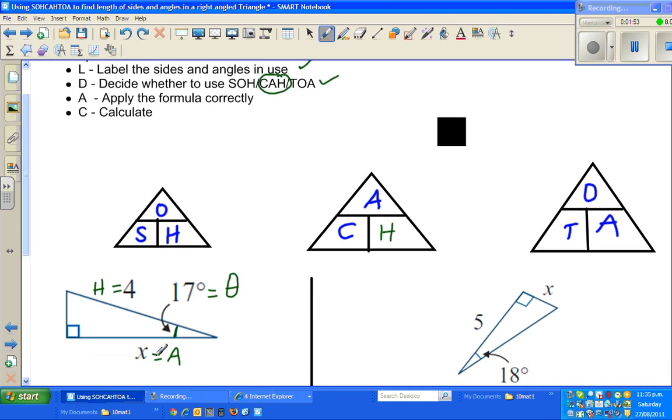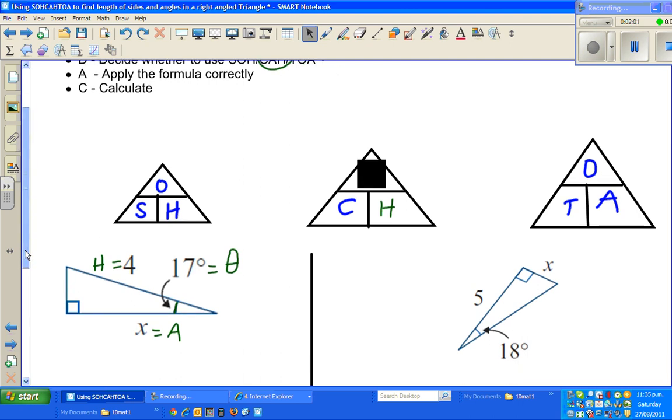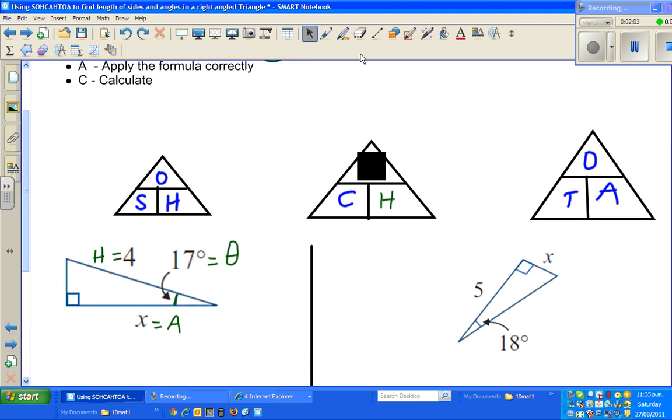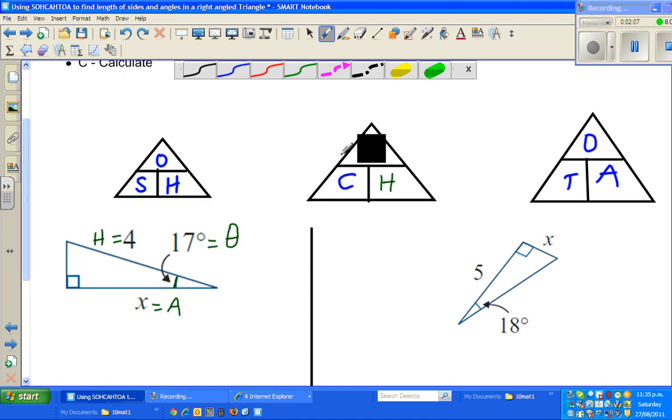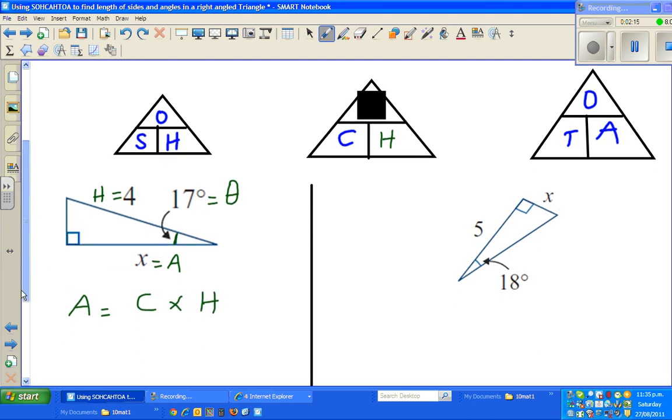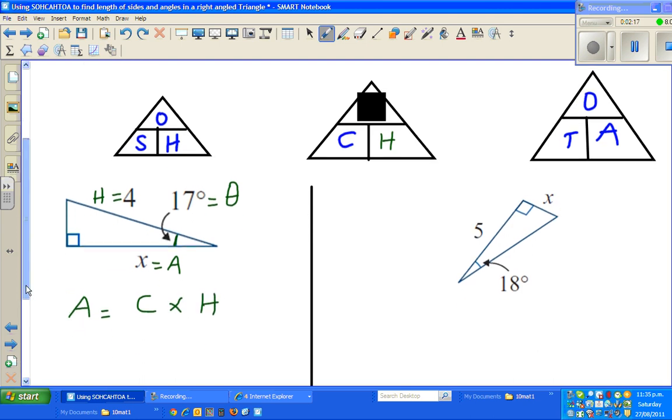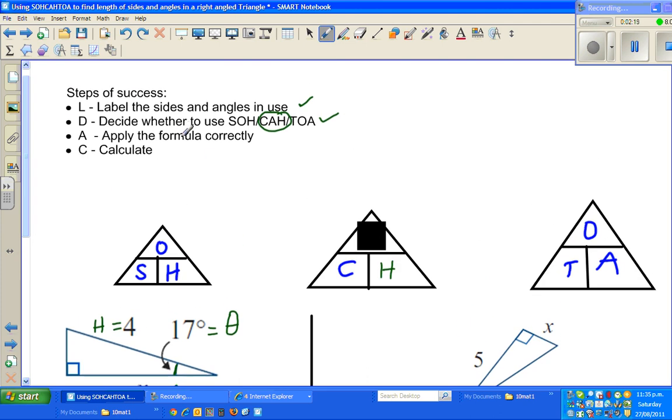Now I want to find the adjacent side, so I will cover the A. When you cover the A, what is that you can see? I can see C and H sitting together, so they have to be multiplied to find A. So A is C times H, just like that. Now I have to substitute or apply. Let me go over.